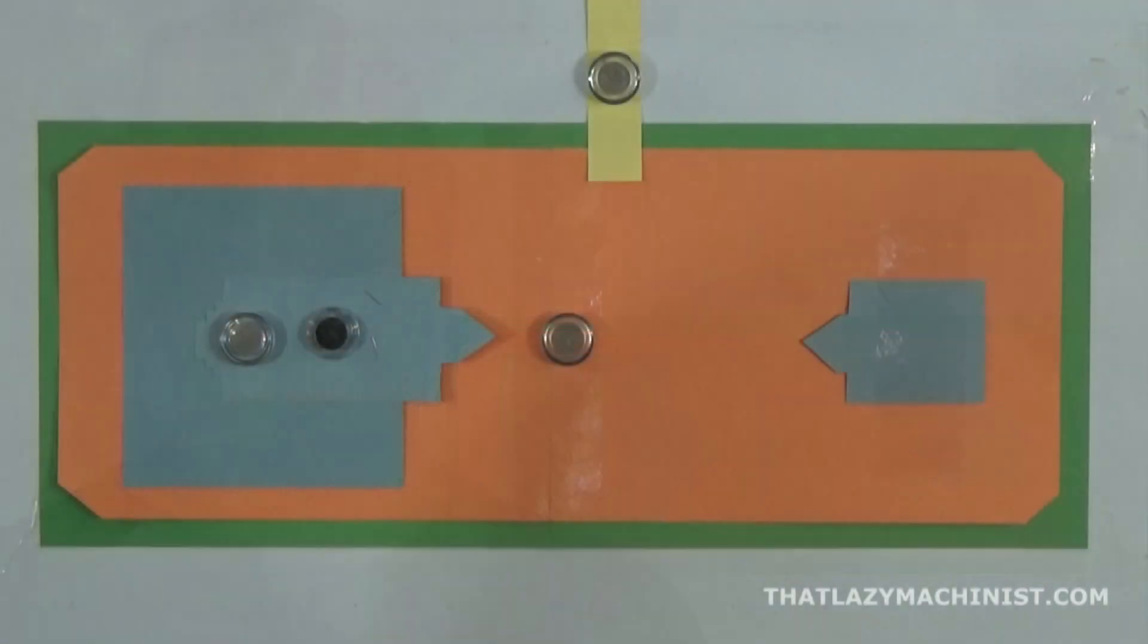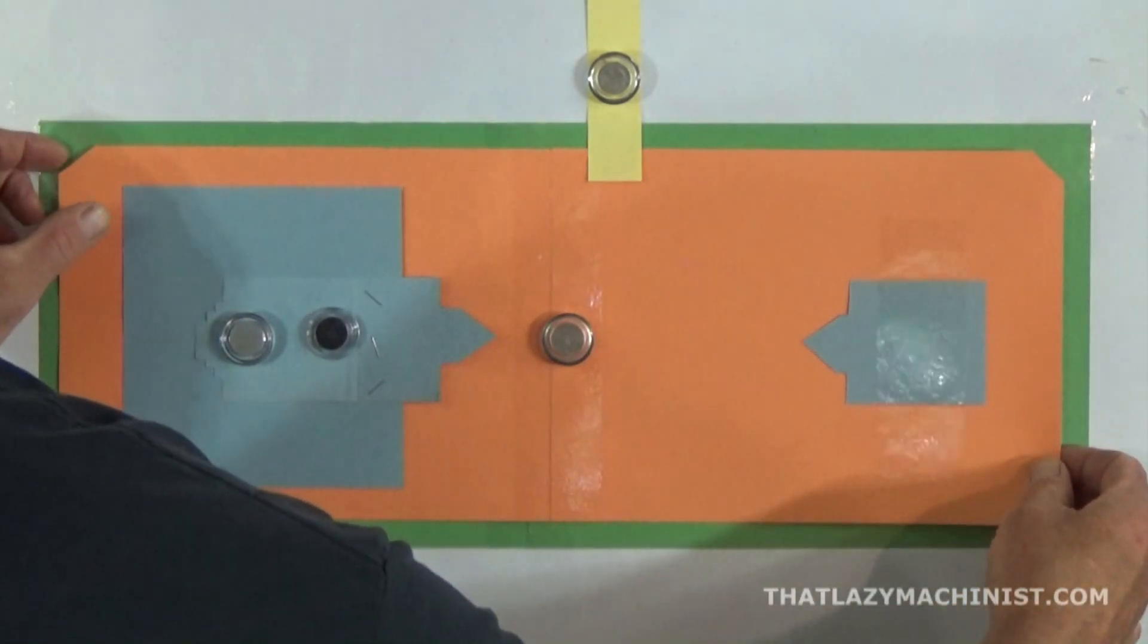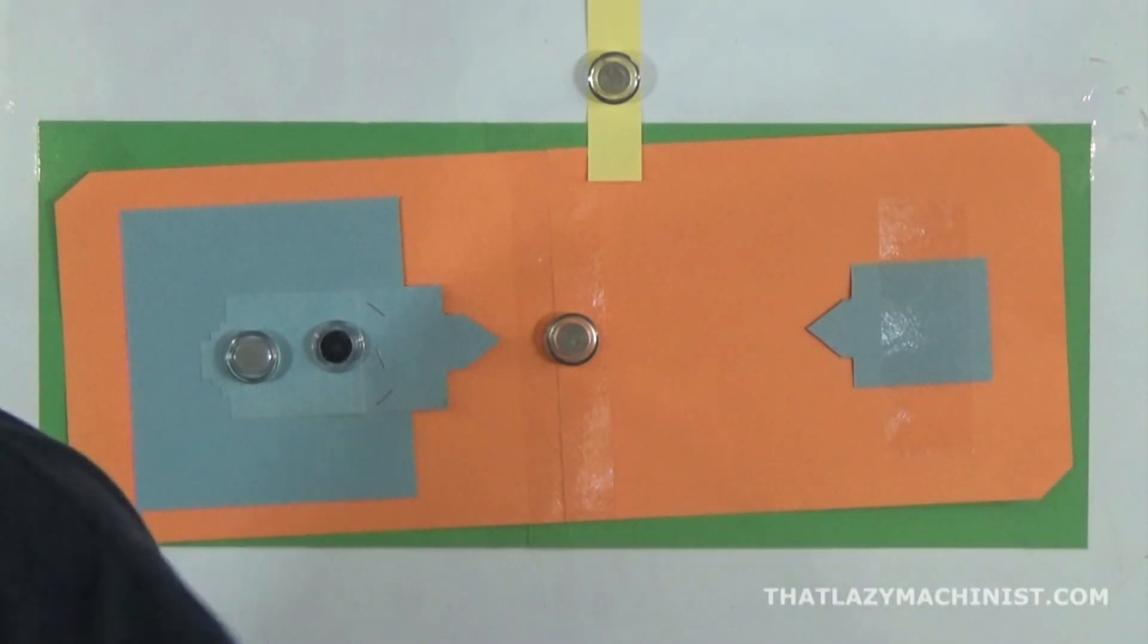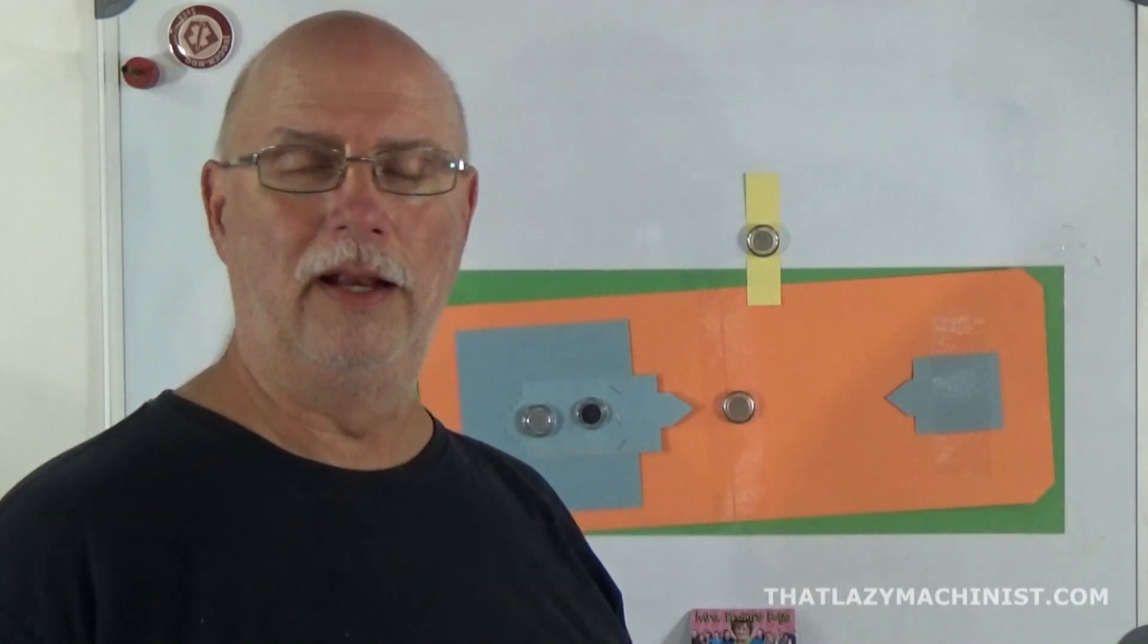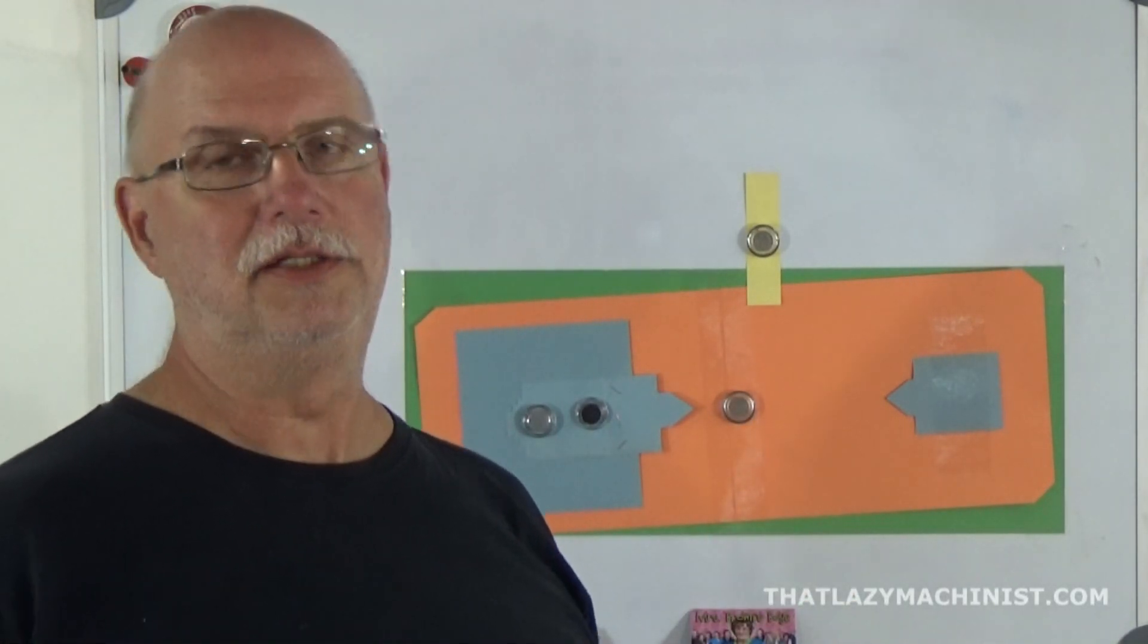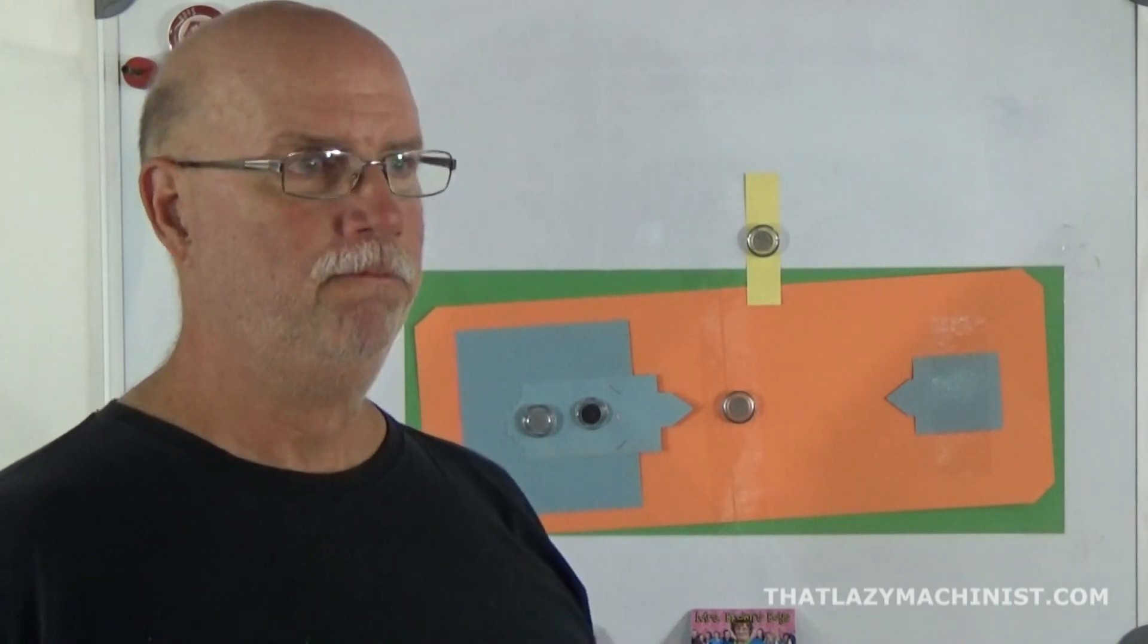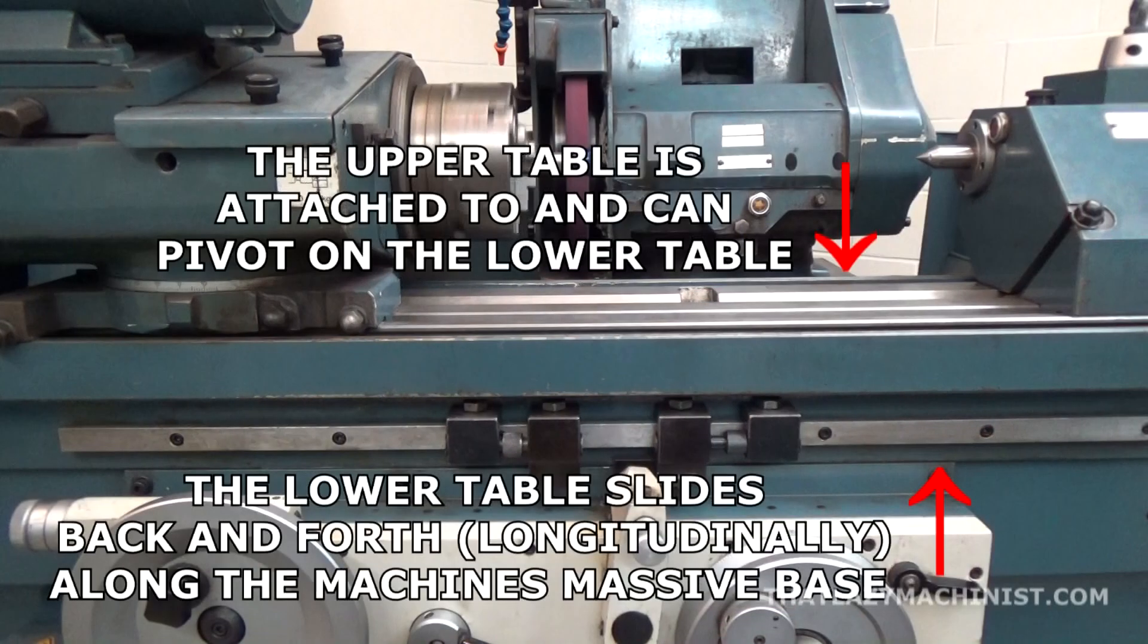Let's take a look at why so many components of this machine can be offset and let's start with offsetting the upper table. Now if I offset the table like that, it's probably because I want to cut a taper. A few things need to be said here.